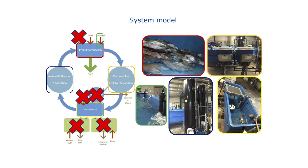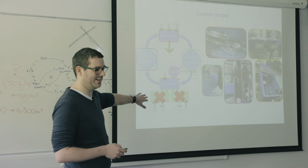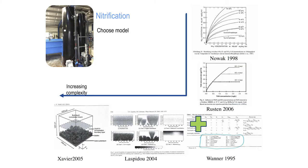Now we start with the system model. You may remember our system: we have the production basin, the drum screen, the pump sump, nitrification, and aeration. What we don't have — as it would be too complicated to introduce the entire system today — is flotation, denitrification, sedimentation, pH buffering, or salt. So it's really simplified.